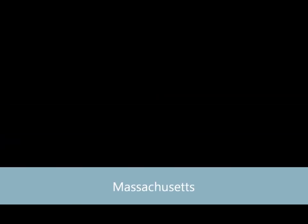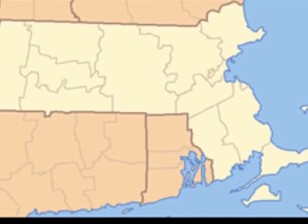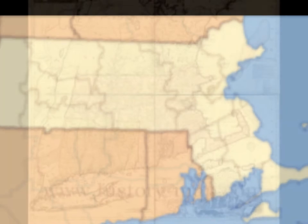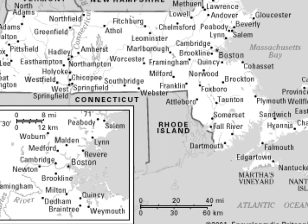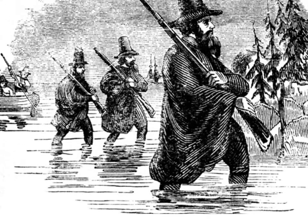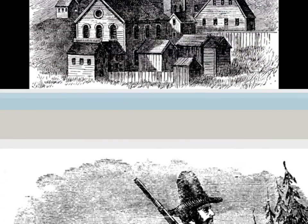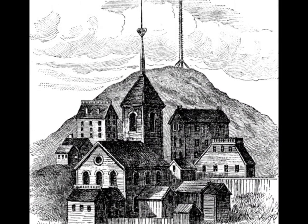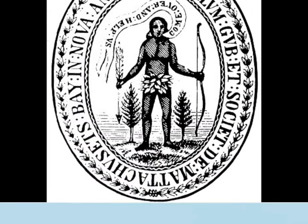A Puritan, John Winthrop, led the colony of Massachusetts in 1630, bringing 900 people to Massachusetts. More Puritans continued to come, making it a large Puritan community. Massachusetts was created for the purpose of religious freedom. The land was very uneven and had many hills. The major economic activities for Massachusetts were fishing, corn, livestock, shipbuilding, and lumbering.